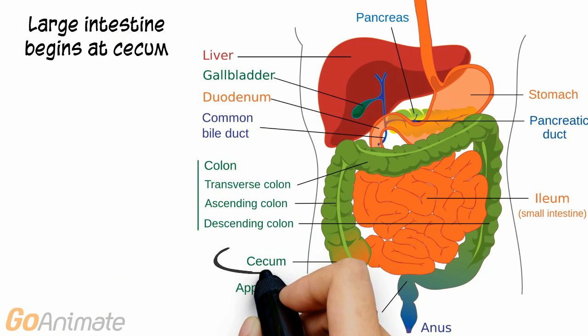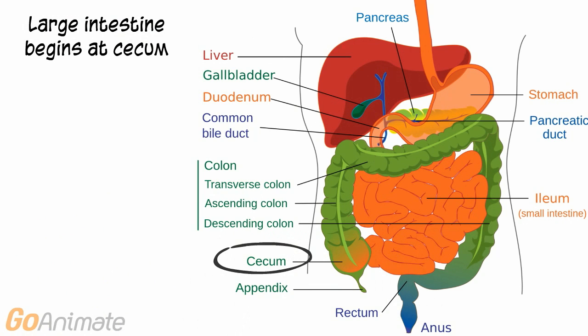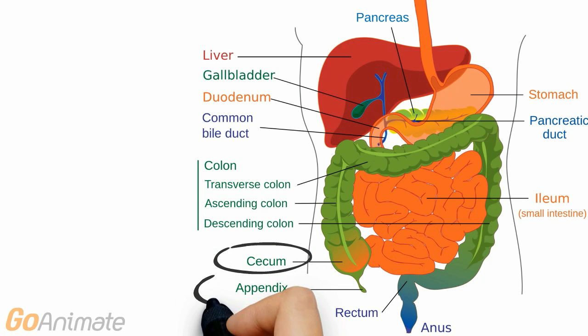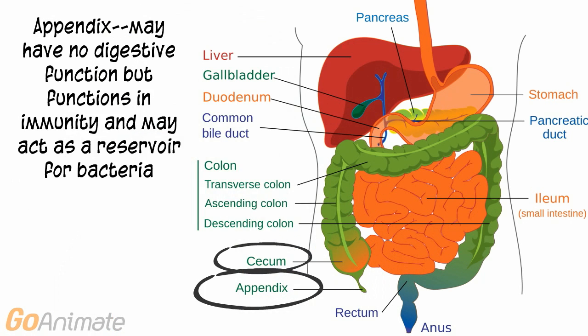The large intestine begins at the cecum. There is a valve between the ileum and cecum called the ileocecal valve, which keeps the contents from the large intestine from moving back into the small intestine. The cecum contains the appendix. The appendix may have no digestive function, but functions in immunity and may act as a reservoir for bacteria.